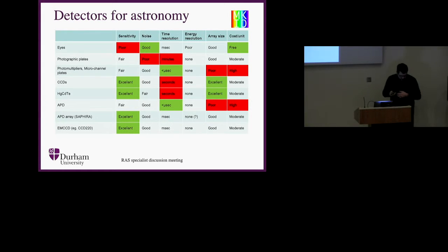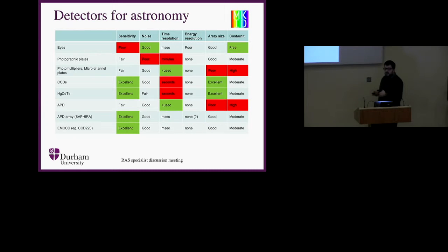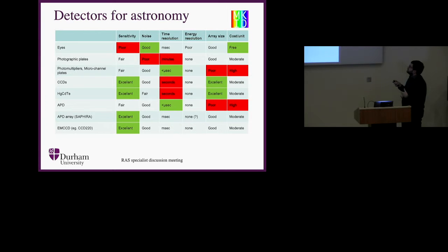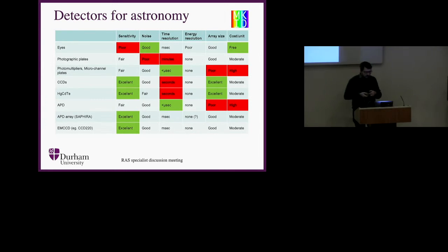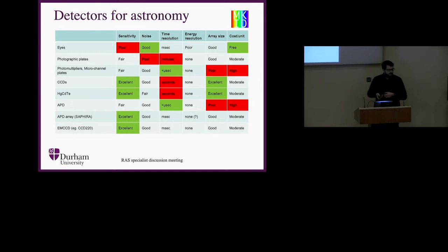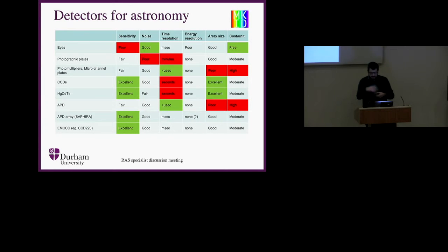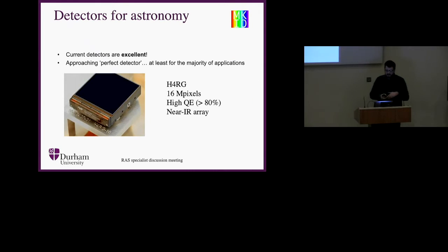Array size — how big can we make these things? Some of these CCDs in the mosaic arrays are amazing in size. Cost is changing all the time, but a lot of these are still limited: if you want more green boxes in one column, something else goes red. I'll go through a few of the detectors — people may have mentioned some today — just to give a flavor, but Paul Jordan will be up next talking about this a lot more. Current detectors are really excellent and are approaching the perfect detector, at least in many respects.